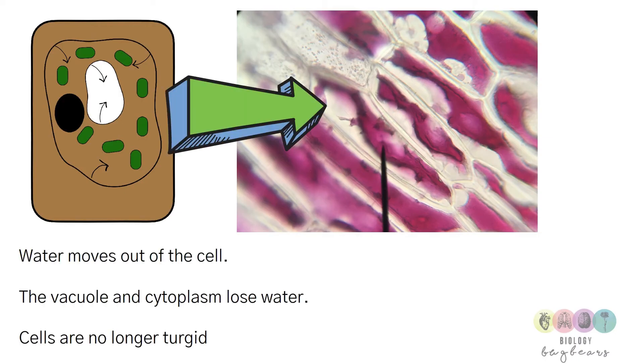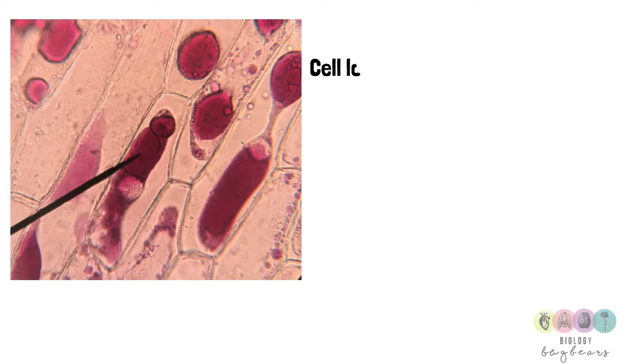The vacuole has shrunk in size and the cells are no longer turgid. The cells are no longer turgid because the contents are not swollen with water and pushed against the cell wall, so they're now flaccid.